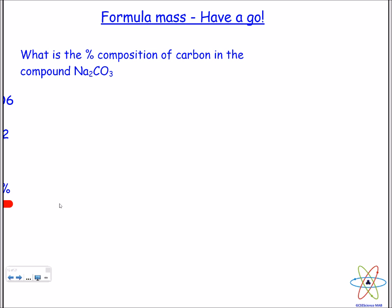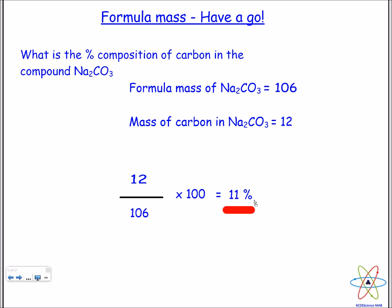Why don't you pause the video and have a go at this question. I'll go through the answer next. Okay, so first we work out the formula mass for sodium carbonate, which is 106. We then work out the mass of carbon that the question is asking for—there's only one carbon, so it's 12. Put that into our equation: 12 over 106 multiplied by 100, and that gives you 11 percent.